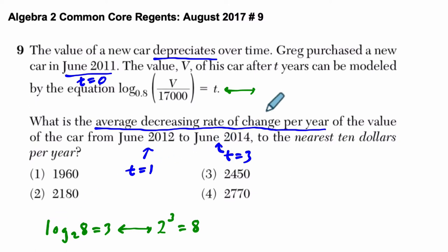In our case, it's 0.8 to the power of T equals V over 17,000, which is a lot less friendly. But the idea is the same. And if we want to get V by itself, we do want to get V by itself. We're trying to plug in T and get V. We multiply both sides by 17,000, and we get 17,000 times 0.8 to the T equals V.